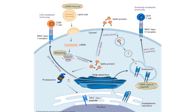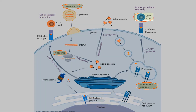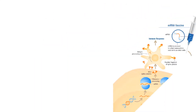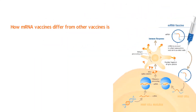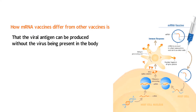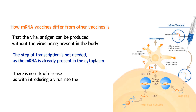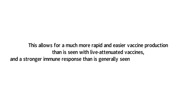This antigen presentation will then initiate the immune response from CD4-T helper cells, eventually resulting in production of memory B cells and memory T cells, providing immunological memory. How mRNA vaccines differ from other vaccines is that the viral antigen can be produced without the virus being present in the body. Even the step of transcription is not needed, as the mRNA is already present in the cytoplasm, and there is no risk of disease as with introducing a virus into the body. This allows for a much more rapid and easier vaccine production than is seen with live attenuated vaccines, and a stronger immune response than is generally seen with inactivated vaccines.